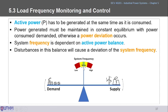When active power is balanced between supply and demand, the system frequency is exactly 50 Hz. If demand exceeds supply, frequency drops. If supply exceeds demand — for example during sudden load drops — the excess supply pushes frequency up to a higher level. The tolerance is only ±1%.